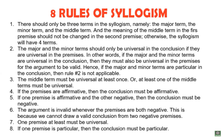Rule number four: if the premises are affirmative, then the conclusion must be affirmative. Rule number five: if one premise is affirmative and the other negative, then the conclusion must be negative. Rule number six: the argument is invalid whenever the premises are both negative, because we cannot draw a valid conclusion from two negative premises. Rule number seven: one premise at least must be universal. Rule number eight: if one premise is particular, then the conclusion must be particular.